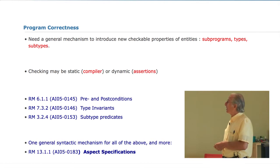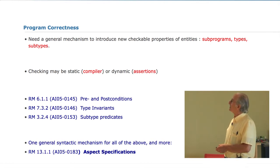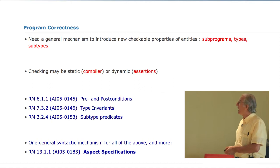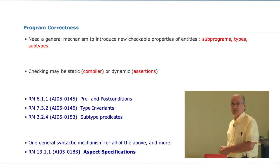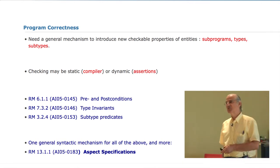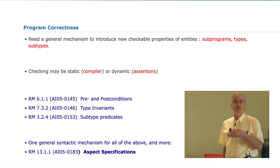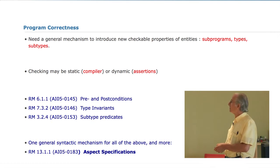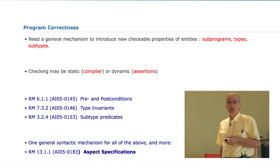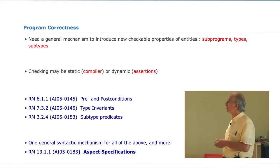The three mechanisms are: pre- and post-conditions that address subprograms, type invariants that address opaque private types, and subtype predicates that for the most part relate to scalar subtypes and allow you to describe subtypes that are not contiguous in values. All of this is presented by means of one new syntactic mechanism called an aspect specification, which we'll speak about in a moment.